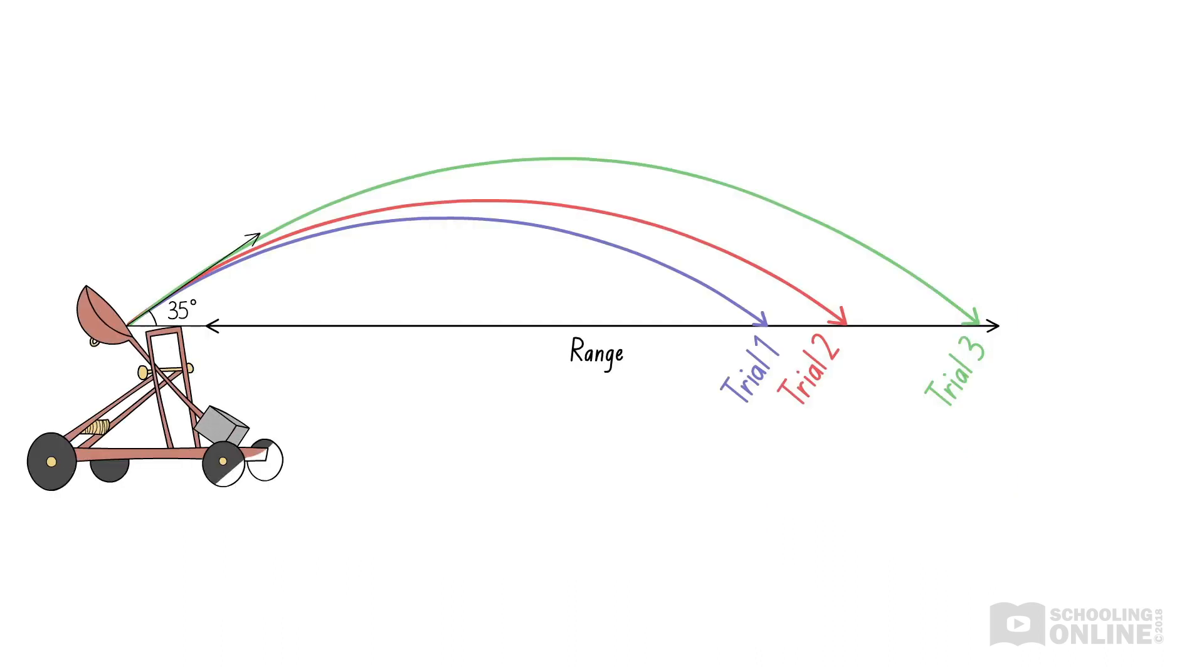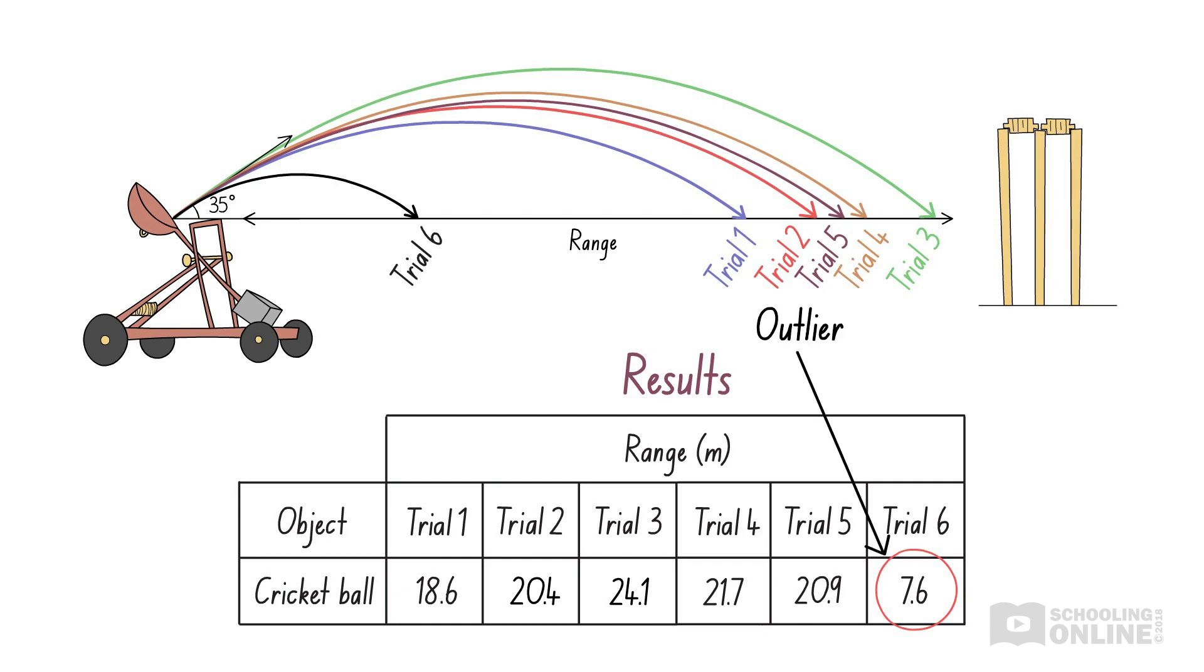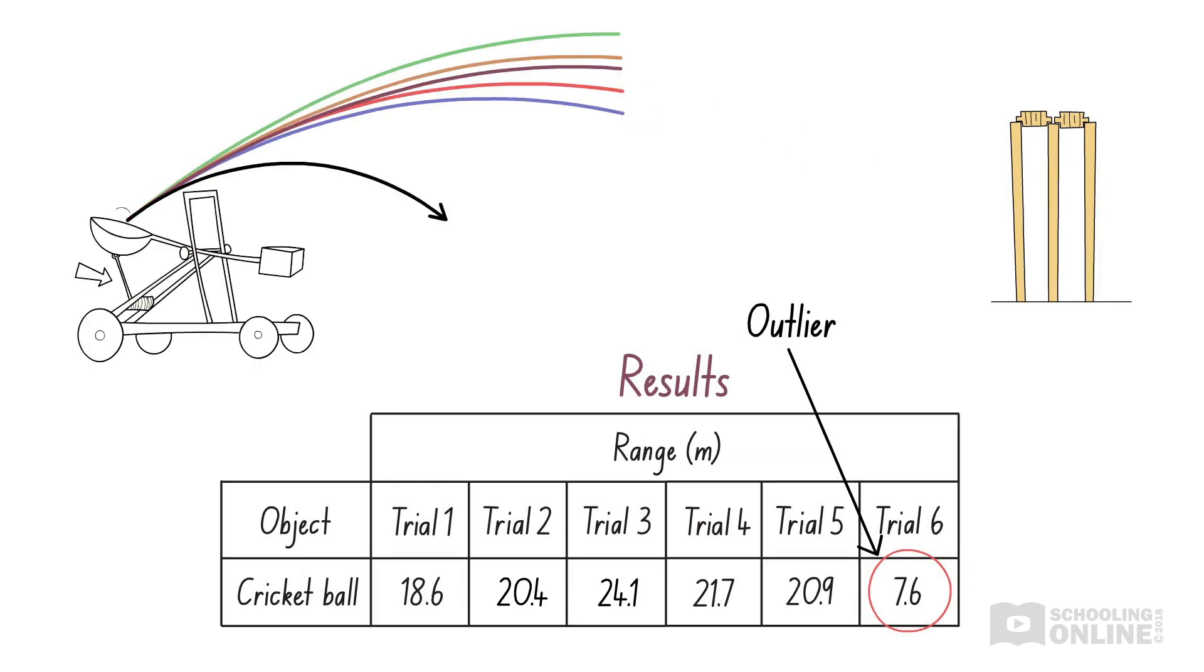Let's go back to the experiment where we measured the range of a cricket ball launched by a catapult. The results that we've collected show a fair amount of variation, ranging from approximately 18 to 24 metres. Since the first three results weren't very reliable, we repeat the experiment another three times. But for some reason, the last measurement is completely out. If we compare it to the other results, we can easily conclude that it's an outlier because it's much smaller than all the others. Why did this occur? Perhaps the catapult jammed when we conducted the sixth trial. If so, the ball would have been launched at a lower speed, so its range would be reduced. In any case, we should ignore this outlier when performing calculations.